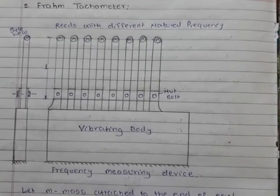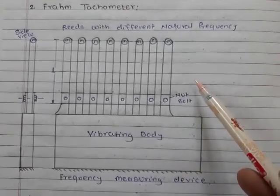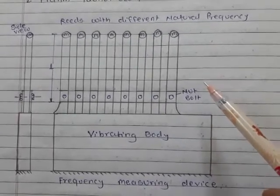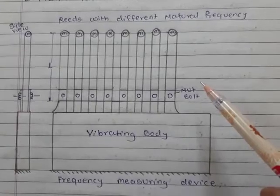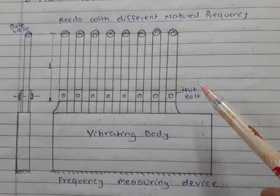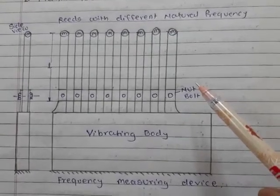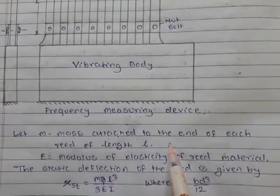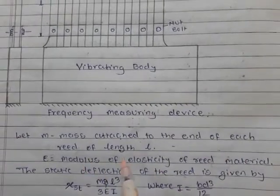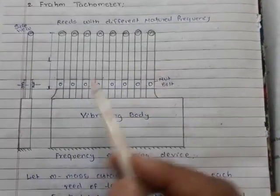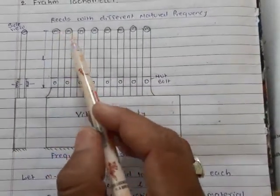The instrument is brought in contact with the vibrating body whose frequency is to be measured, and one of the reeds will have a maximum amplitude, and hence that reed will be showing the frequency of that vibrating body. Let m equal mass attached to the end of each reed of length l. At the end of these reeds, mass is attached.